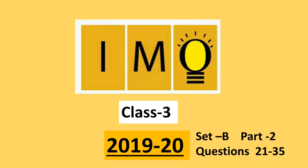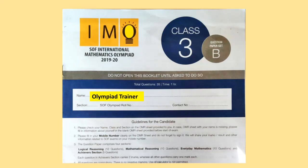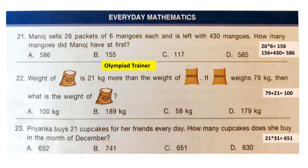Welcome to our channel Olympiad Trainer. Here I am with the question paper of IMO, that is International Mathematics Olympiad exam for class 3, year 2019-20, Set B. We have already solved the first two sections — logical reasoning and mathematical reasoning — in the previous video. Link of that video is given in the description box. In this video we are going to solve Everyday Mathematics and Achievers section. New users please subscribe our channel Olympiad Trainer for more such solved question papers. Let's start with question 21.